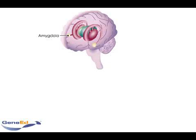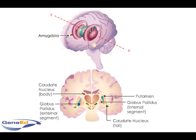The basal ganglia comprise a group of subcortical nuclei deep within the white matter of each hemisphere. They play key roles in motor coordination.